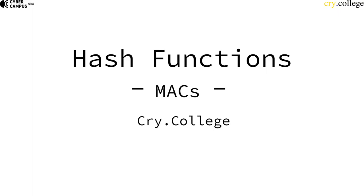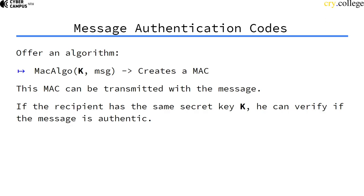One important primitive that can be built from hash functions is message authentication codes. A message authentication code is an algorithm that takes a key k and a message, and then outputs a message authentication code. This MAC can then be transmitted with the message, and everybody who is in possession of this key can verify if the message was actually authenticated with the key.